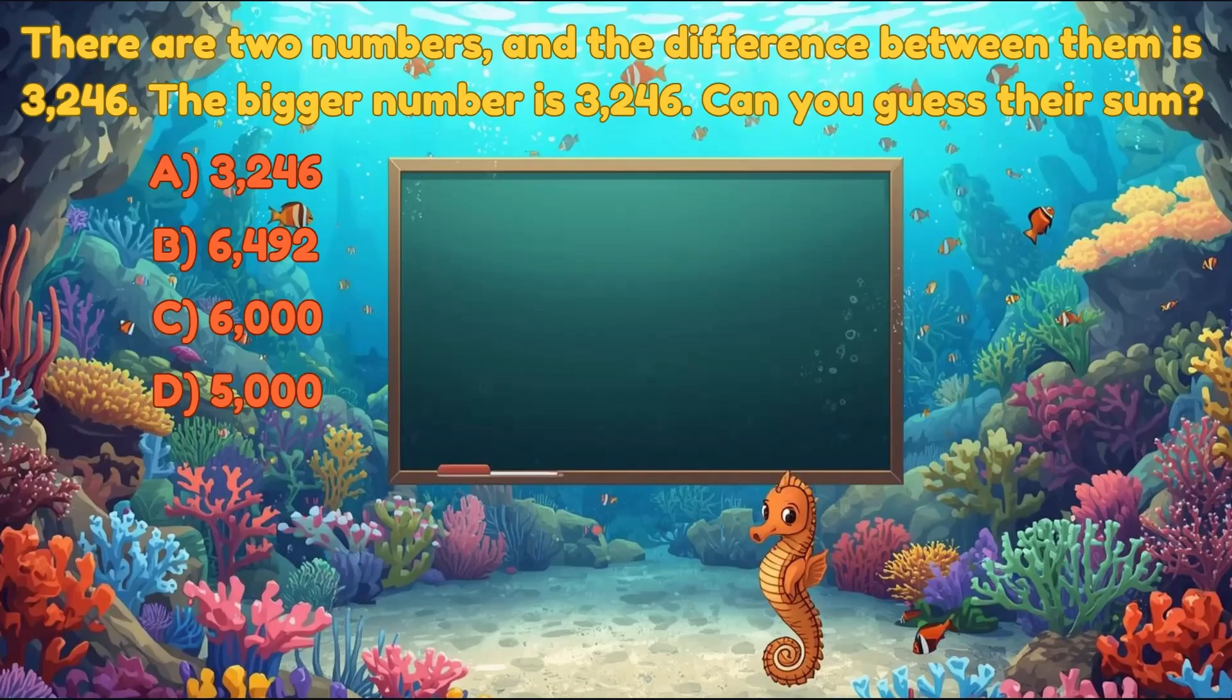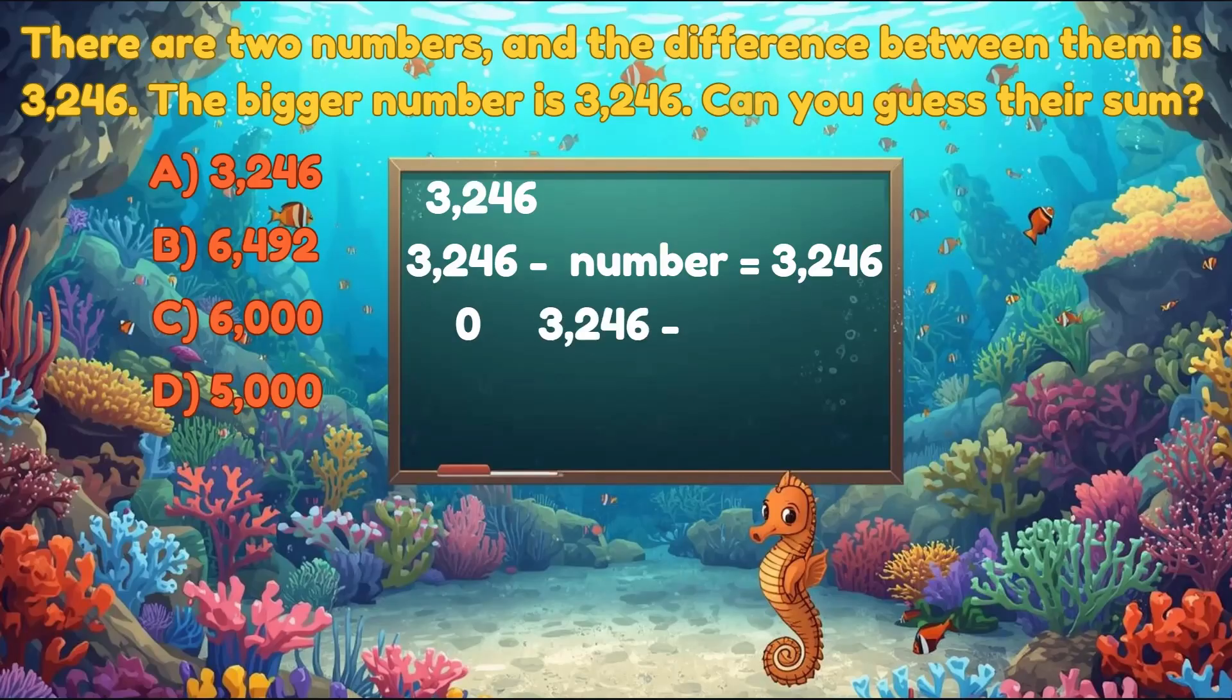Let's solve it together. We know the bigger number is 3,246. The difference between the two numbers is 3,246. Since the difference is the same as the bigger number itself, this means the smaller number must be 0. Why? Because subtracting 0 from any number gives the same number. 3,246 minus 0 equals 3,246. This gives us our difference of 3,246.